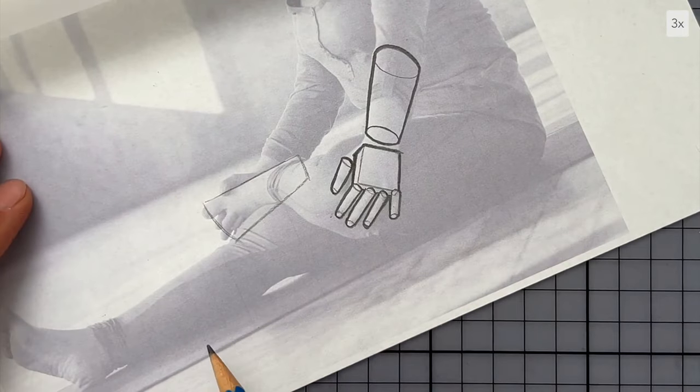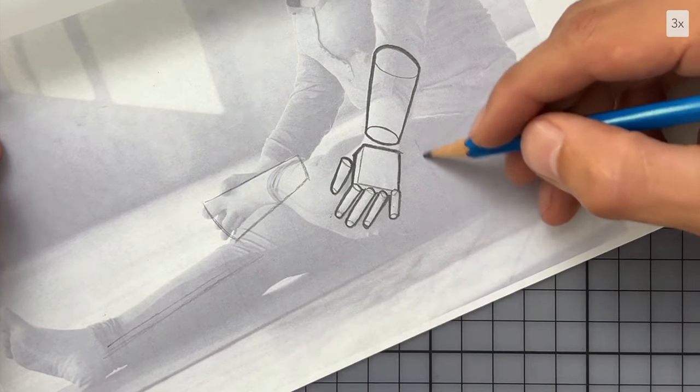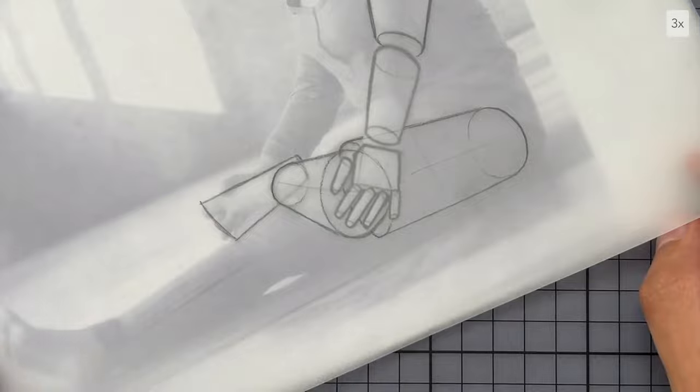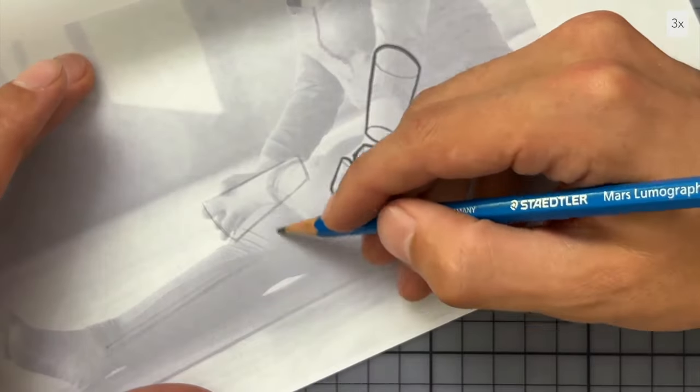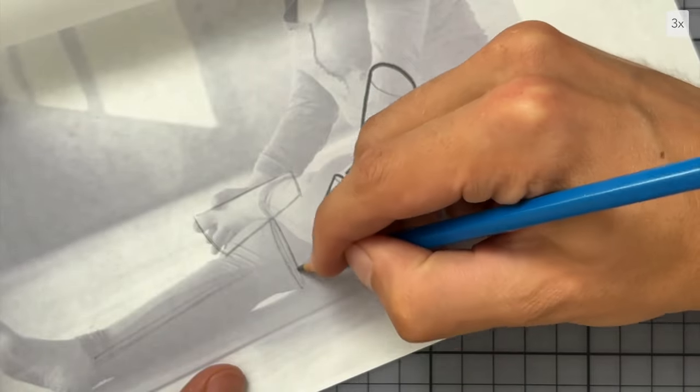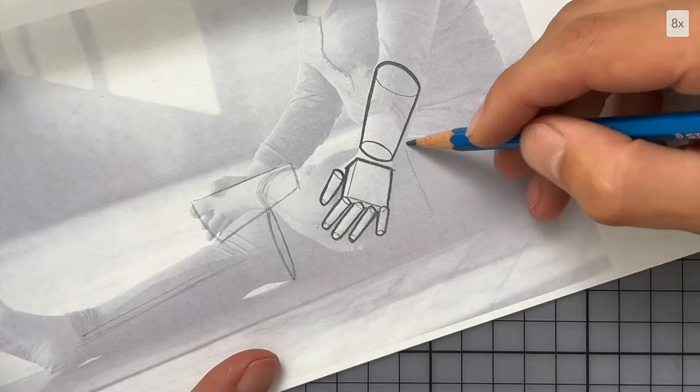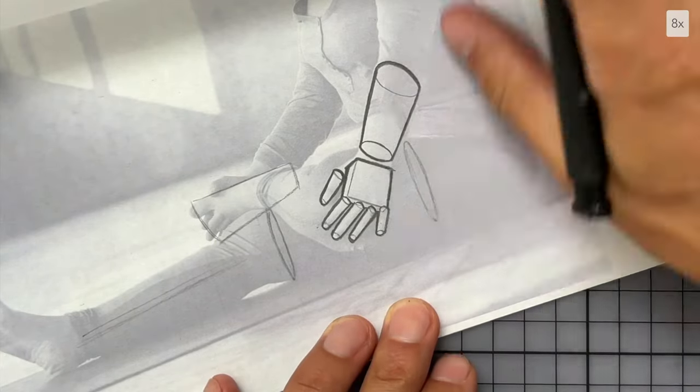Next, I draw the stretched out leg. We cannot see where the leg starts, but I estimate it begins around here. And I'm ending the cylinder just before the knee. The ellipses here are very narrow. Let's speed this up again. I think you get the idea.